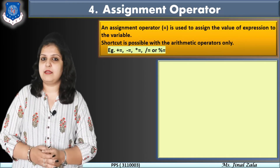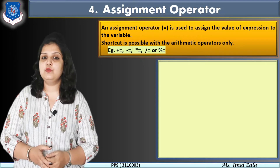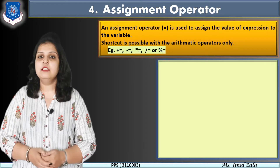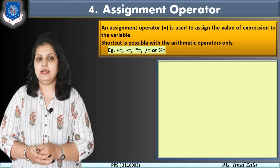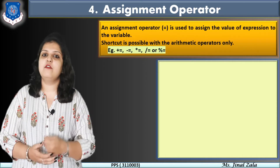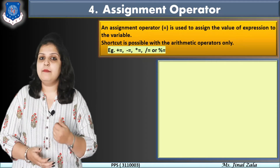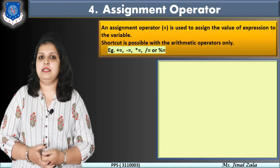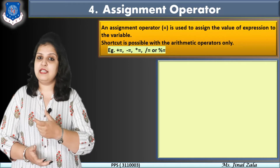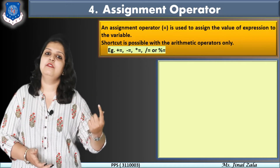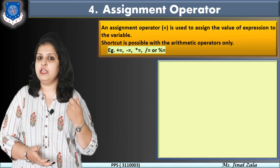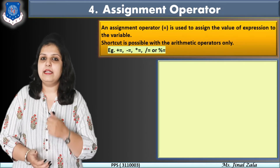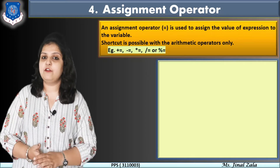What is the use of the assignment operator? It is used to assign a value or an expression to a variable. For example, writing A = 10 assigns a value to the variable. If we write A = B + C, then B + C is an expression, and its value is assigned to variable A using the equal-to sign. This is called an assignment operation.